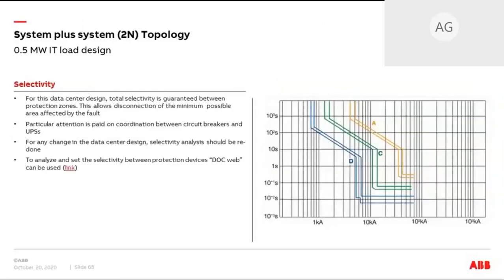I already mentioned selectivity. We've done the complete selectivity study and we can guarantee you total selectivity. What does it mean? It means that only the part of the electrical system which is affected by a fault will be disconnected. All the rest of the system, we can guarantee, will remain up and running. Some particular attention was paid to the coordination between circuit breakers and UPSs — this is addressed in the design itself, as it can be quite tricky when performing the selectivity study.